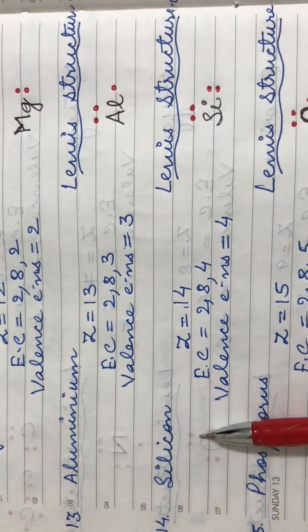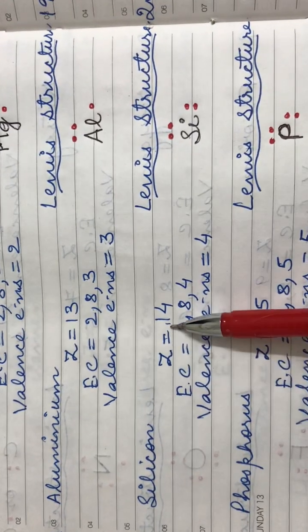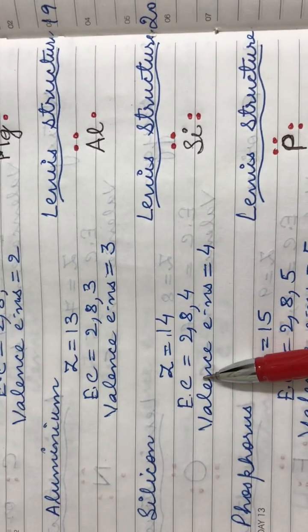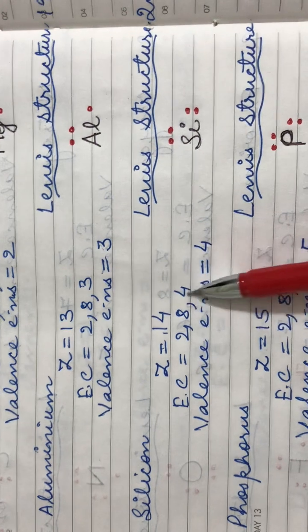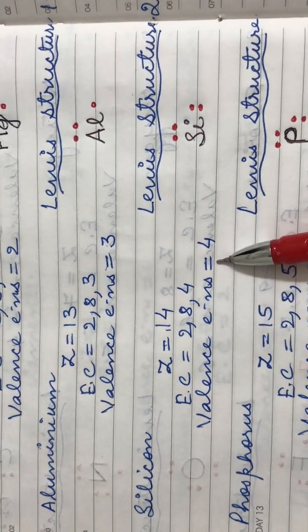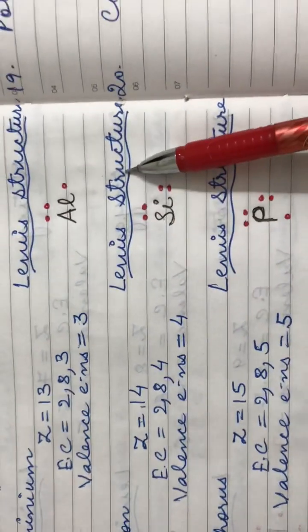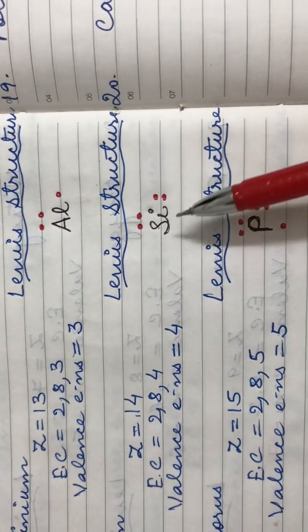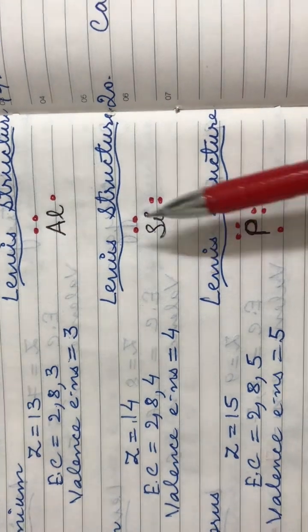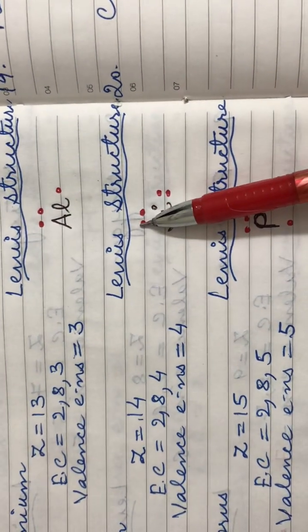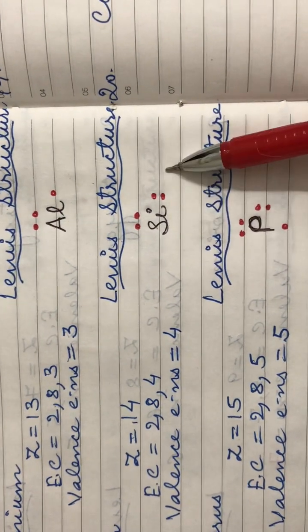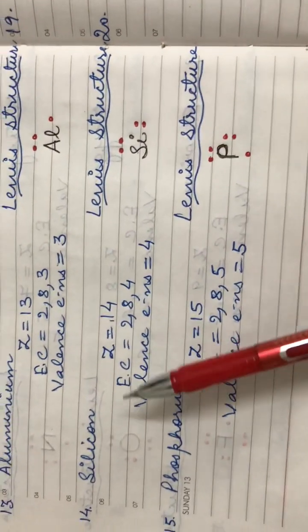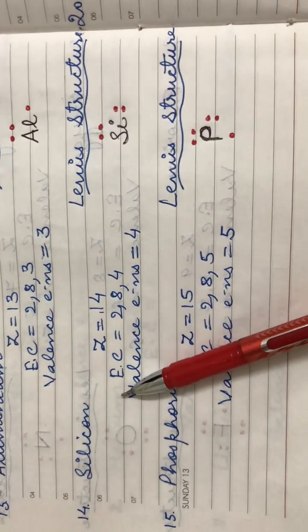Coming to the next element, silicon. It has an atomic number of fourteen. Its electronic configuration is 2,8,4 and it has four electrons in its valence shell. Therefore, the Lewis structure for silicon is the symbol Si with four dots placed around it.